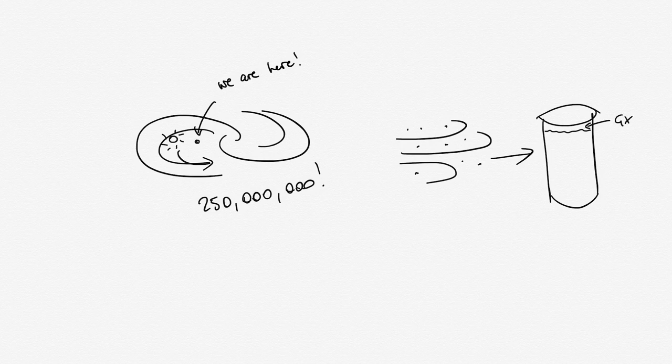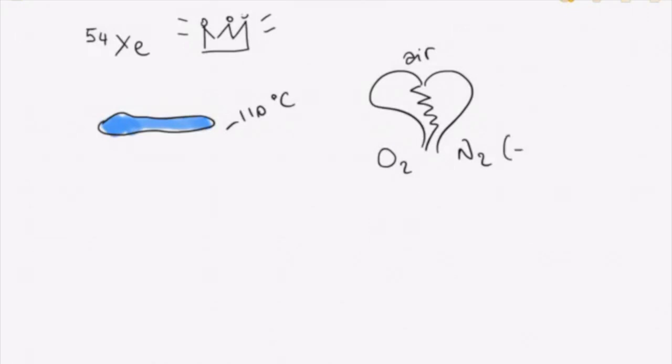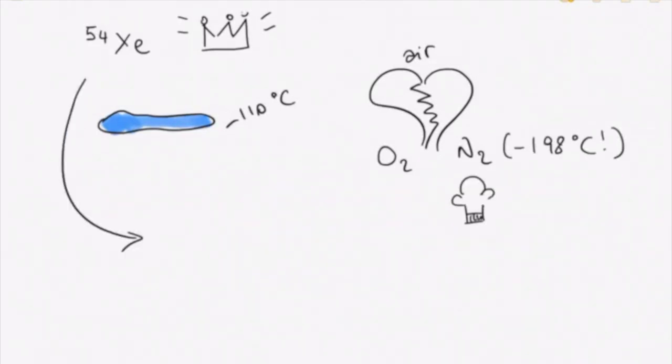Our detector uses xenon in its liquid and gaseous form. Xenon is a noble gas which gets liquid at roughly minus 110 degrees. It is commercially produced as a by-product of the separation of air into oxygen and nitrogen, a lot warmer than liquid nitrogen that some chefs use for cooking. Xenon makes only a very tiny percentage of air.